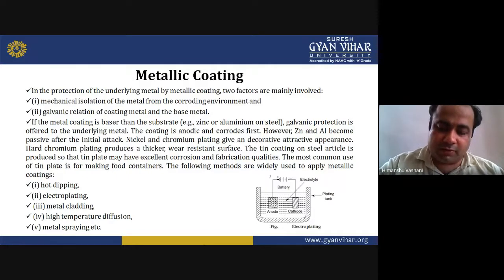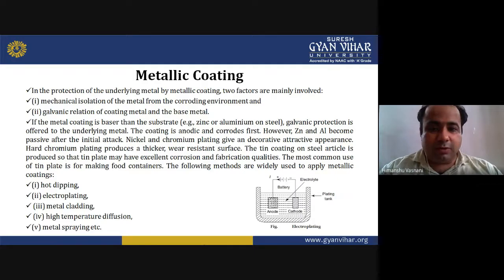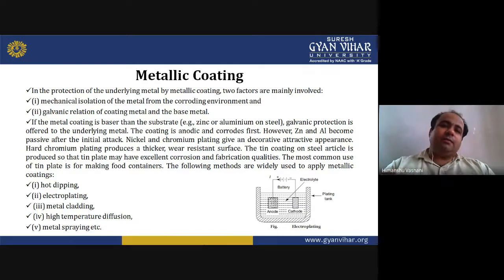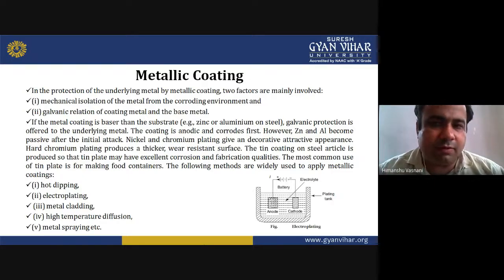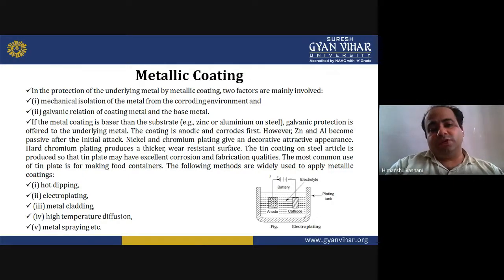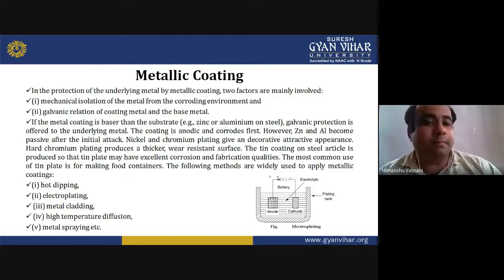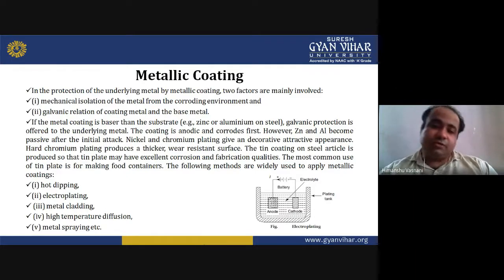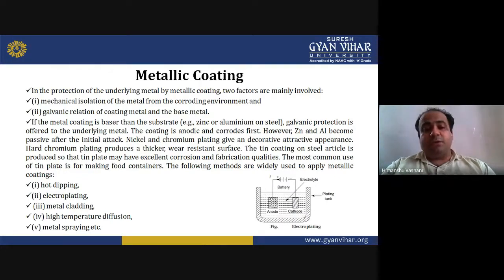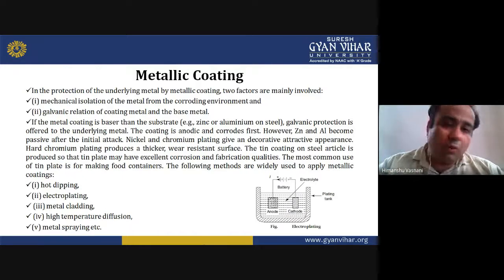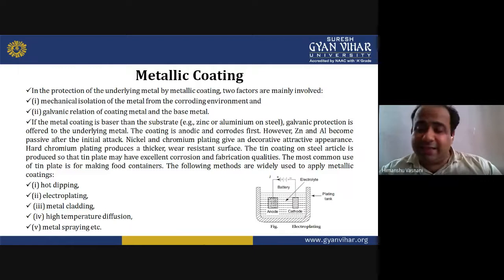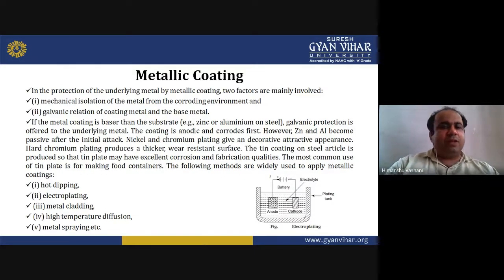Metallic coating is one of the most commonly used methods. In the protection of underlying metal by a metallic coating, two factors are involved: mechanical isolation of the metal from the corroding environment, and the galvanic relation of the coating metal and the base metal. If the coating metal is more base than the substrate — such as zinc and aluminium on steel — galvanic protection is offered. The coating is anodic and corrodes first; however, zinc and aluminium become passive after the initial attack.